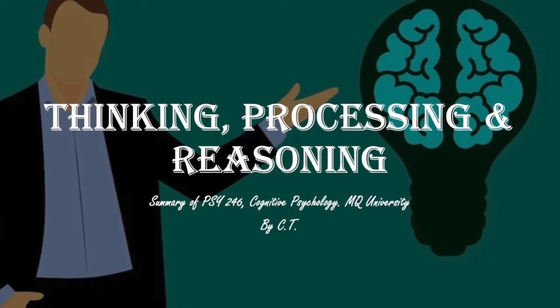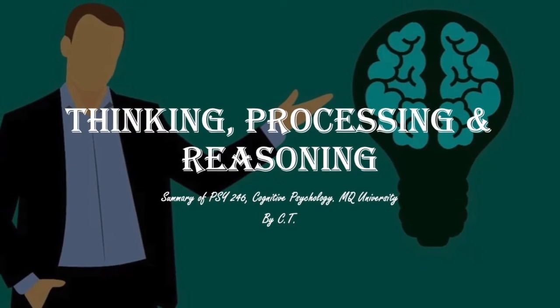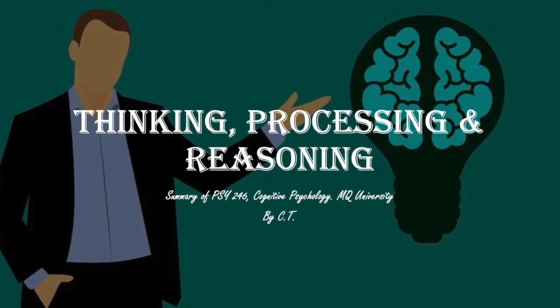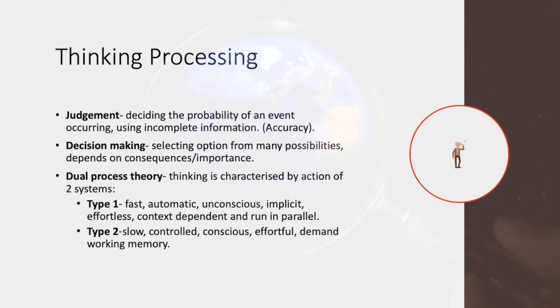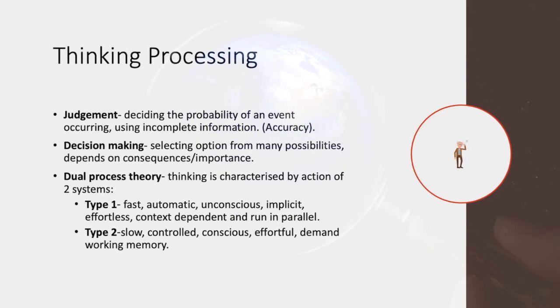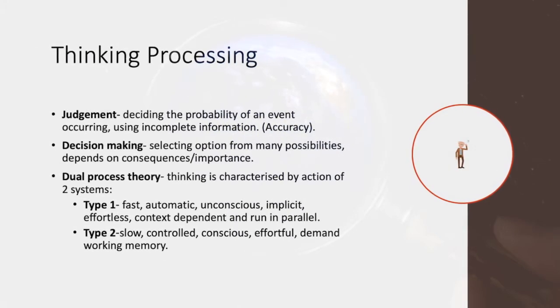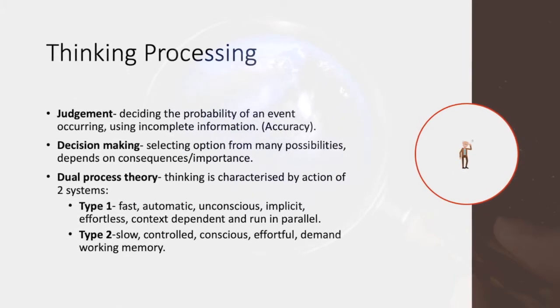Thinking, processing, and reasoning. This is a summary of the PSI 246 course Cognitive Psychology from Macquarie University. Judgment is defined as deciding the probability of an event occurring, often using incomplete information, thus heavily depending on accuracy. Decision making is defined as selecting options from many possibilities and depends on consequences or the importance of the decision.